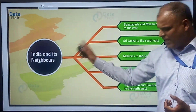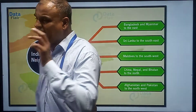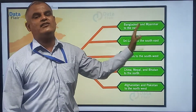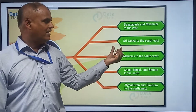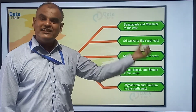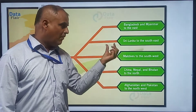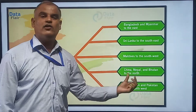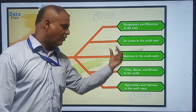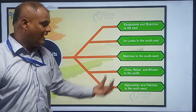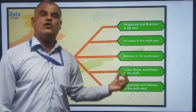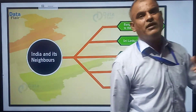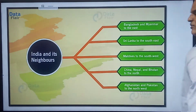This map shows which side India's neighbors are located on. Bangladesh and Myanmar are to the East. Sri Lanka is to the South East, Maldives is to the South West. China, Nepal, and Bhutan are to the North. Afghanistan and Pakistan are to the North West. These are the neighboring countries of India.